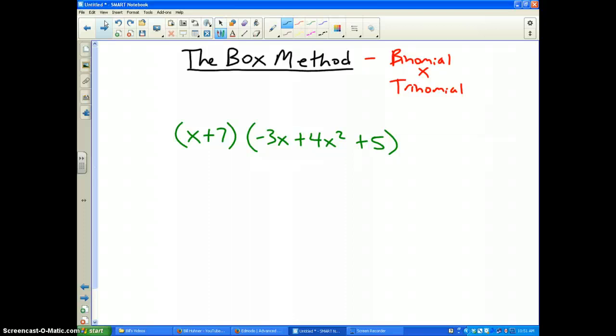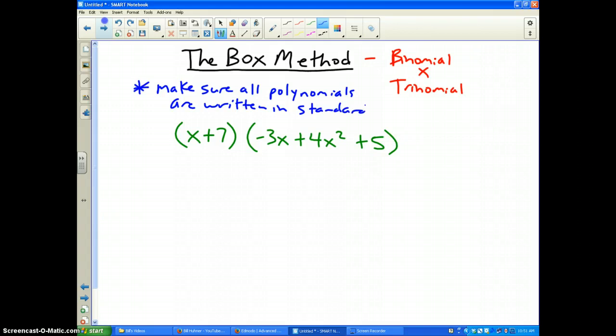Basically, the first and only rule that you need in order to use the box method is to make sure all polynomials are written in standard form. Now upon close inspection of my problem, I'm going to notice that the 4x² needs to be over here and the -3x needs to be over here. I need to have it in standard form, and then this will work really well.